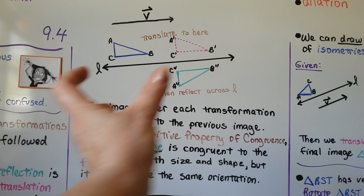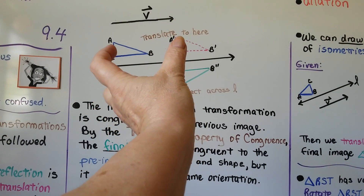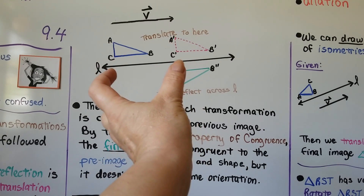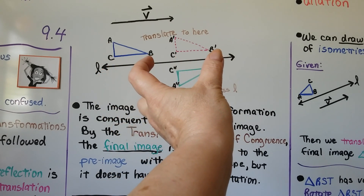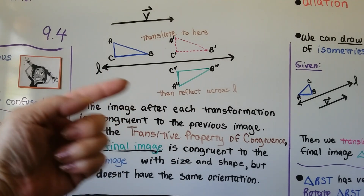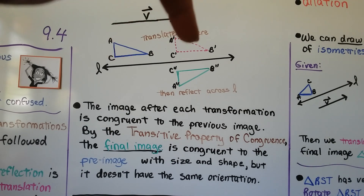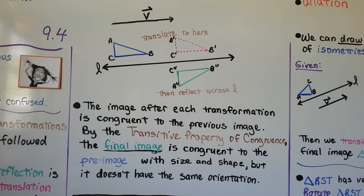Here we have vector v. A translates to a prime the distance of the vector, b translates to b prime the distance of the vector, c to c prime the distance of the vector. Then it's going to reflect across line l to get a double prime, b double prime, c double prime. The image after each transformation is congruent to the previous image.